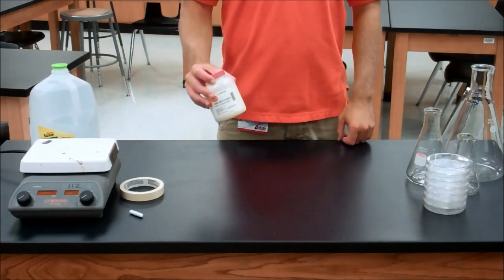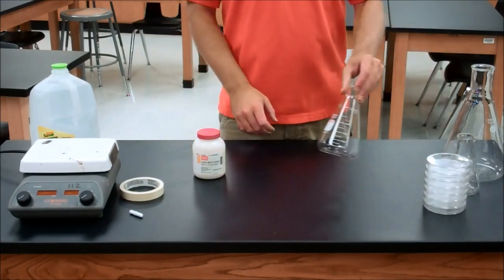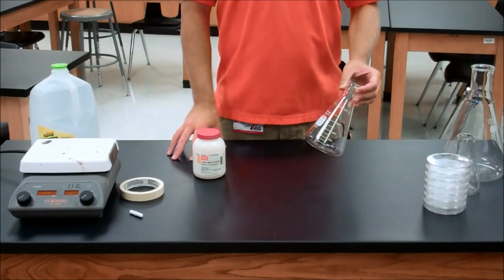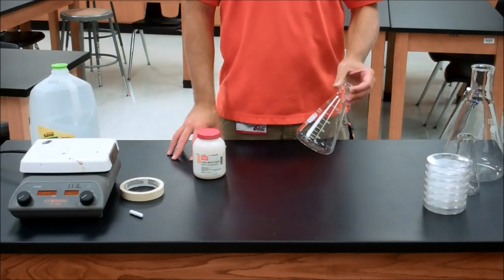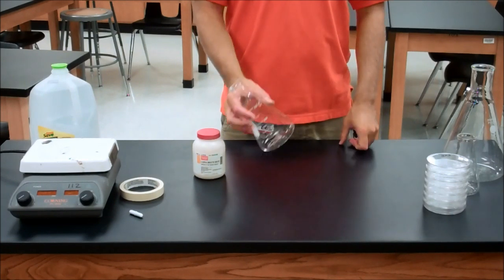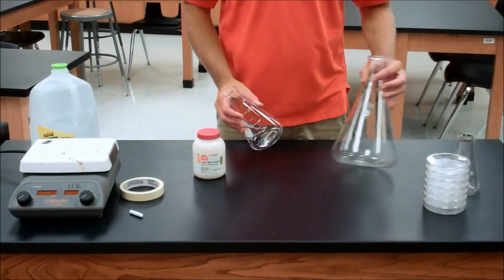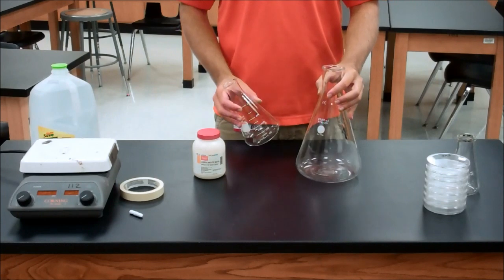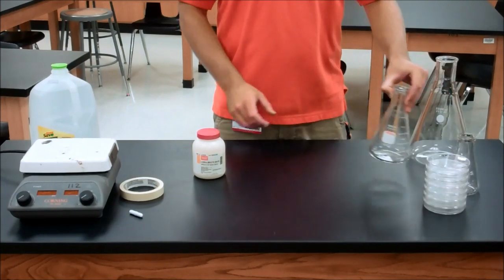Next up, you're going to need to mix this with some water. Erlenmeyer flasks are important because in the heating step, the shape of the flask is going to make the heating process much easier. So make sure you're using an Erlenmeyer flask, and the size depends on how much you plan on mixing. You could use something as big as a 1 liter flask, 500 mils, or any other size.